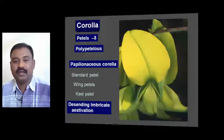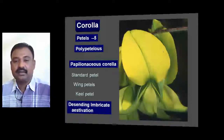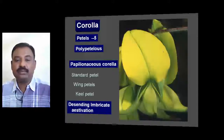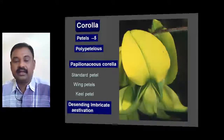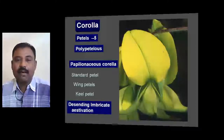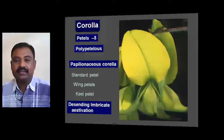Regarding the corolla of Fabaceae: there are five petals present. They are unfused petals, so the condition is called polypetalous. The corolla of Fabaceae is also called Papilionaceous corolla, and this corolla is a striking feature of Fabaceae.